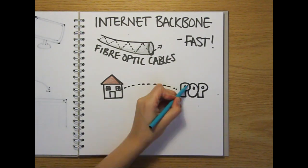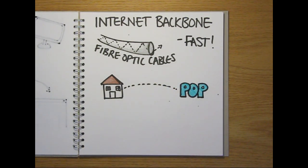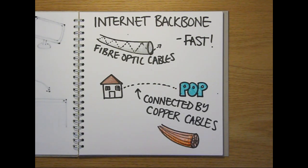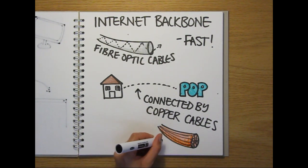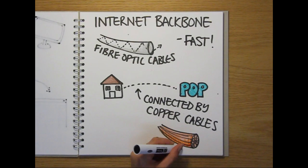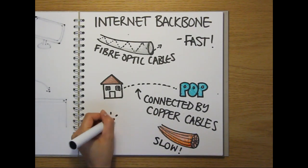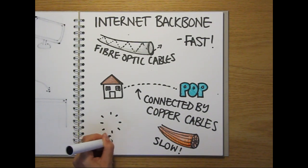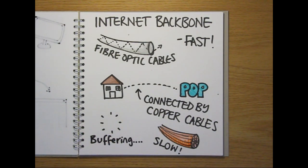But for most people, the journey your data takes across the internet usually begins and ends in copper cables that connect your home or office to your ISP's point of presence. Because transmission speeds in these lines are much slower than in the fiber-optic cables that make up the internet backbone, the majority of the delays in downloading or uploading data occur within just a few miles of where your server is sitting.